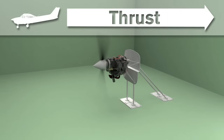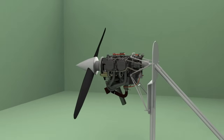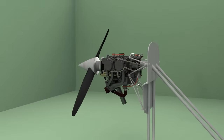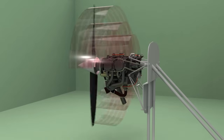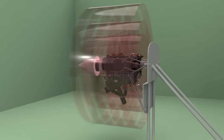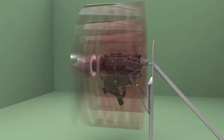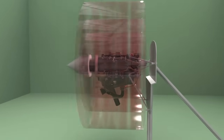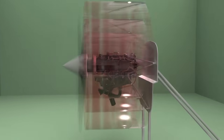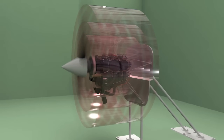A propeller is an airfoil. As such, as it rotates, its blades accelerate the surrounding air towards the aft end of the aircraft. And, as illustrated with Newton's third law, the equal and opposite reaction results in the aircraft moving forward.